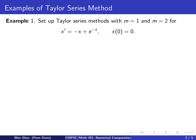Our first example: we will set up Taylor series method with m equals to 1 and 2 for the following problem. x prime equals to negative x plus e to the negative t, initial condition x at 0 equals to 0. One can verify that the exact solution for this initial value problem is t times e to the negative t. You can verify it by plugging into the equation and plugging into the initial condition to see that they are both satisfied.